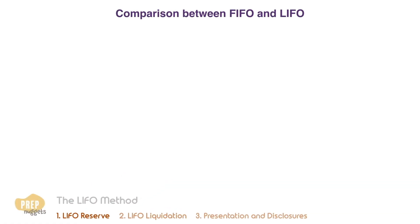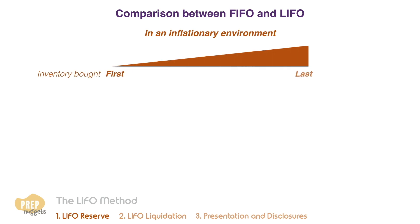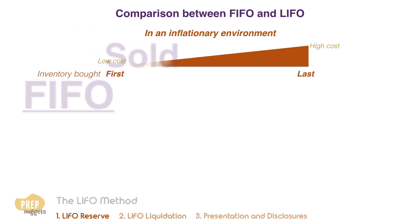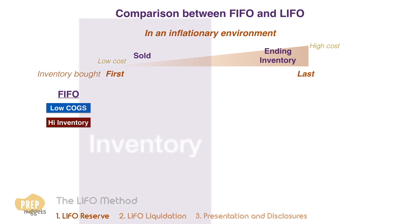Let's first sum up the differences between FIFO and LIFO. Firstly, in an inflationary environment, the cost of the inventory bought first are of lower cost than those that are bought last. As such, the goods sold are of lower cost and the ending inventory are of higher cost under FIFO. Hence, the cost of goods sold in the income statement is lower while the inventory value on the balance sheet is higher.